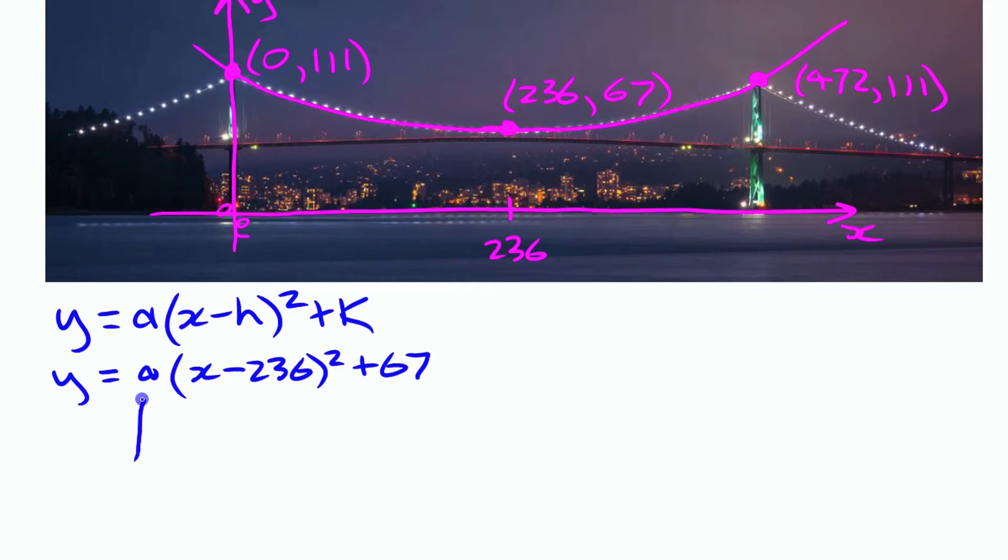Then the only thing we have left here is to find the a value. Now there are several different ways to come up with that a value, but we're going to use one of the simplest here. When we have these big numbers and not really a grid to count on or anything, we are going to substitute a point in. If you have that function and all you're missing is one of the parameters, you can use an x and a y value that you know are on the curve. The key is you have to pick a point on the curve and use them for x and y, and then you can solve for a.